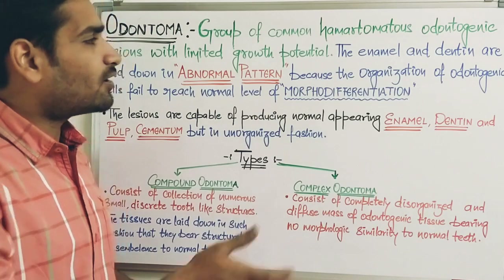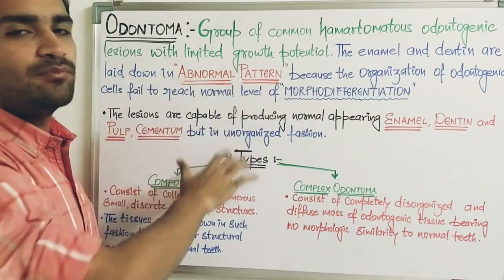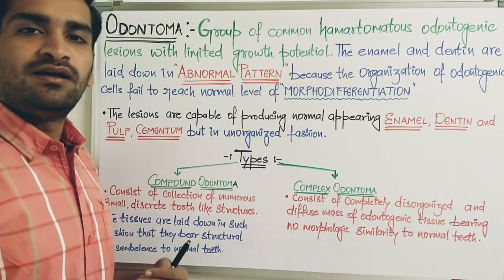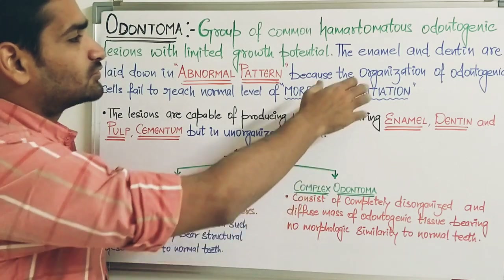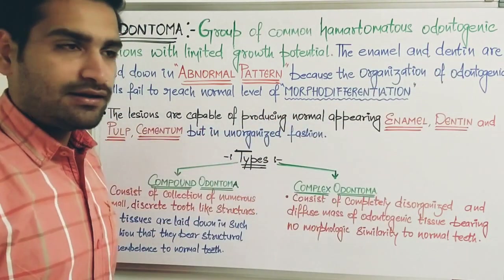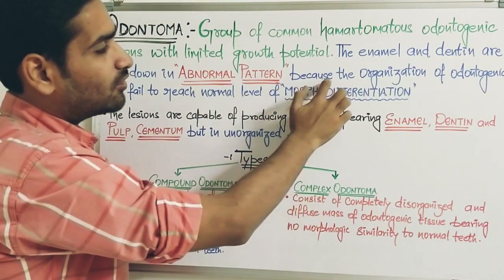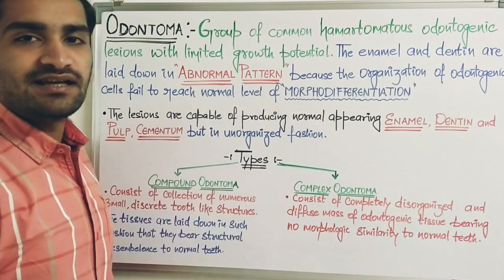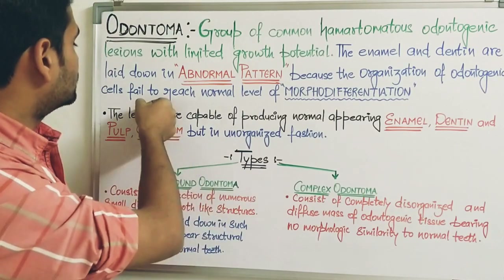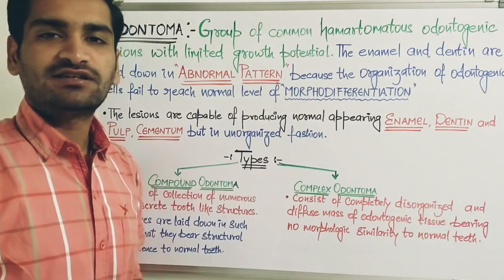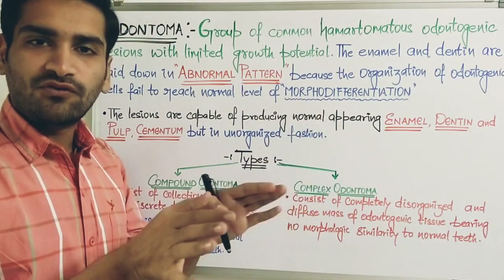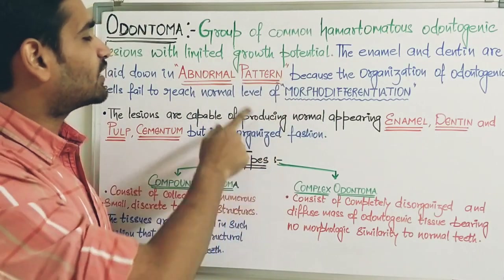Basically in odontoma, the enamel and dentine are laid down in an abnormal pattern. If we talk about tooth development, there are various stages in which enamel is laid down, then dentine is laid down. The same process happens here, but there is not a normal pattern of development. The organization of odontogenic cells — ameloblasts and odontoblasts — fails to reach a normal level of morphodifferentiation.